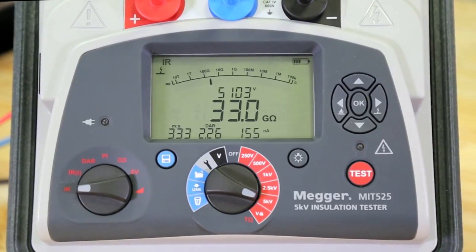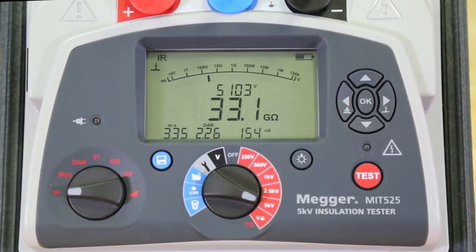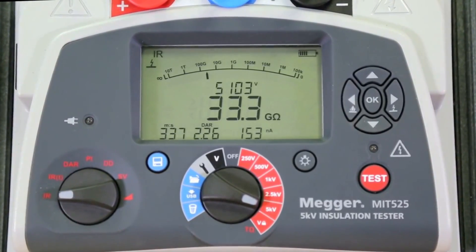The MIT range gives 5% accuracy to at least 1 tera ohm, the sort of value expected in substations.